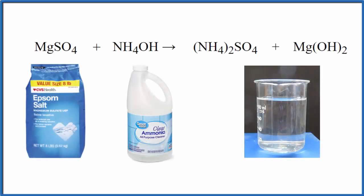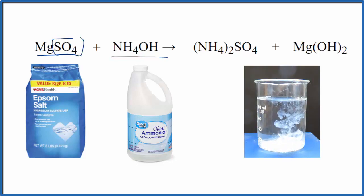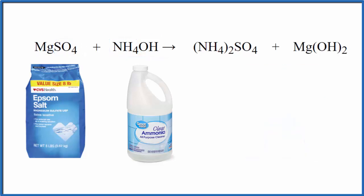Let's take a look at what happens when we put MgSO4 and NH4OH together. This is magnesium sulfate and then we have ammonium hydroxide. These are household chemicals. Many people have these in their home.